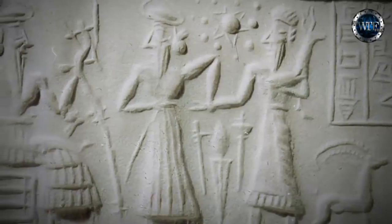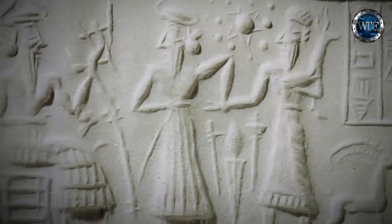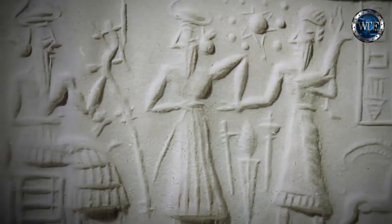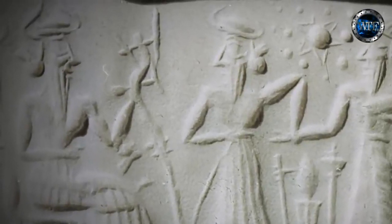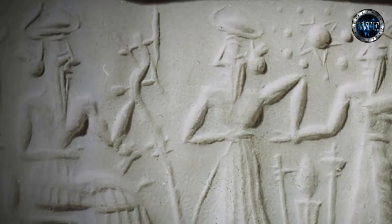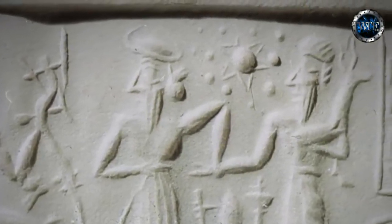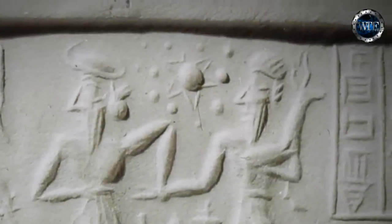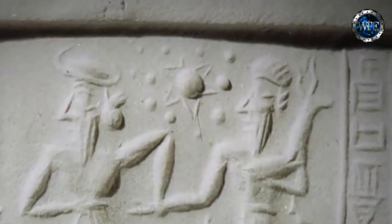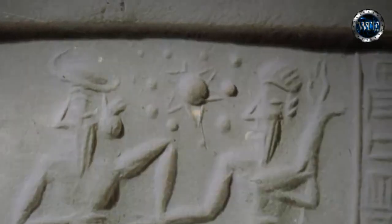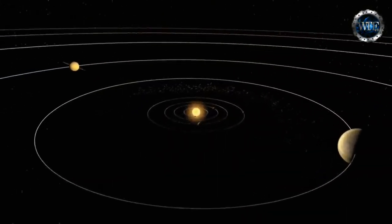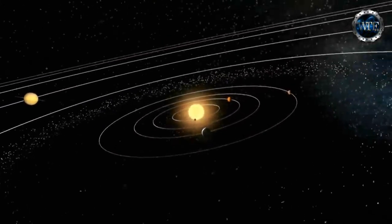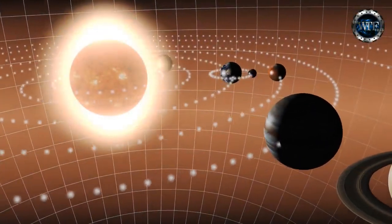This clay tablet carries the print of a cylinder seal about 4,500 years old. It depicts the god Enlil granting the plow to humankind, ushering in the age of modern agriculture. On closer inspection, something completely remarkable can be seen: a detailed depiction of our complete solar system, configured identically to that known to contemporary science today, with the sun prominently figured in the center.